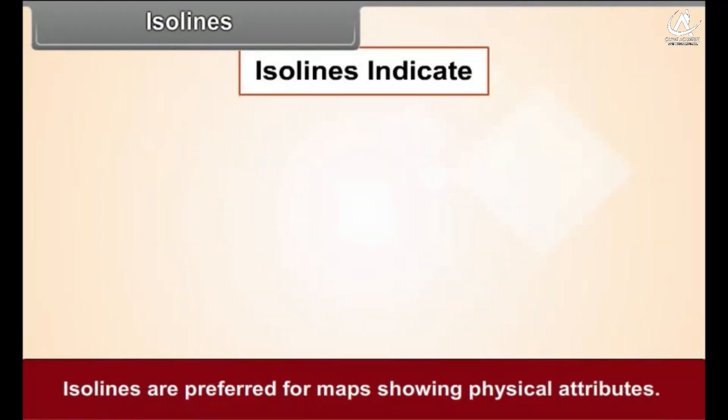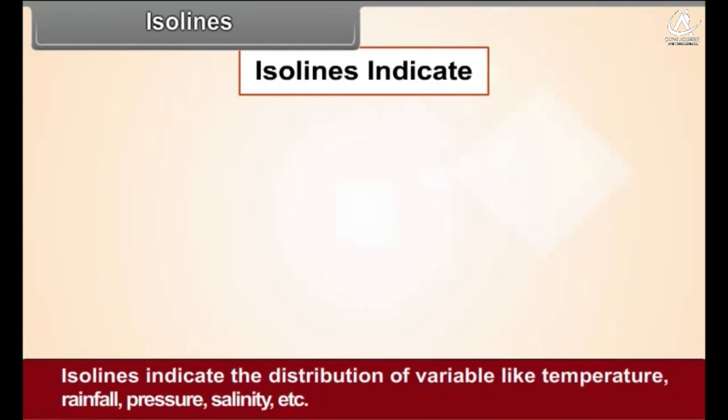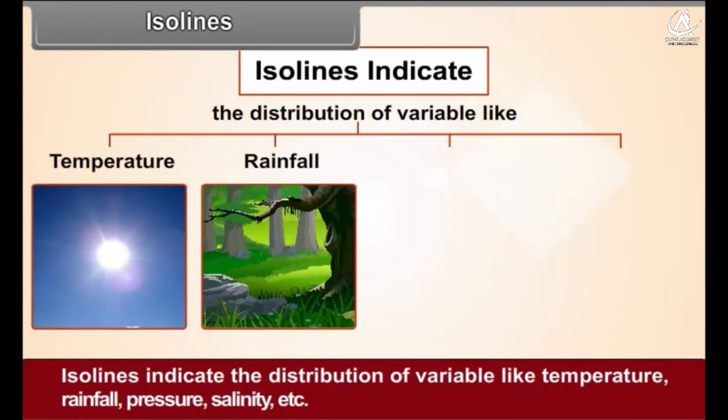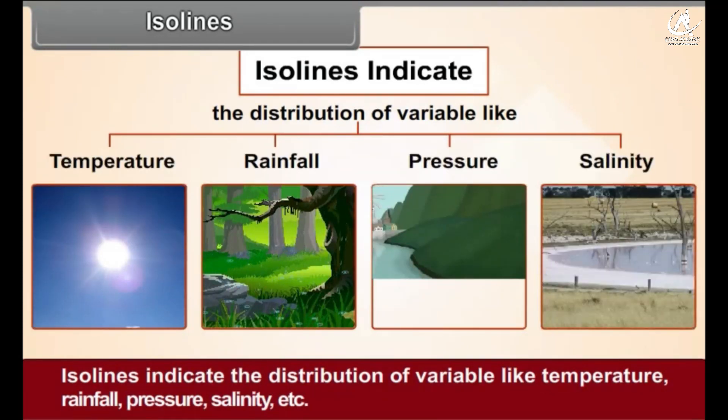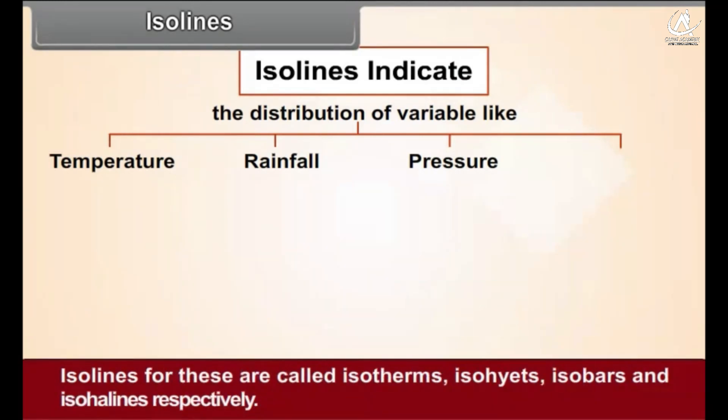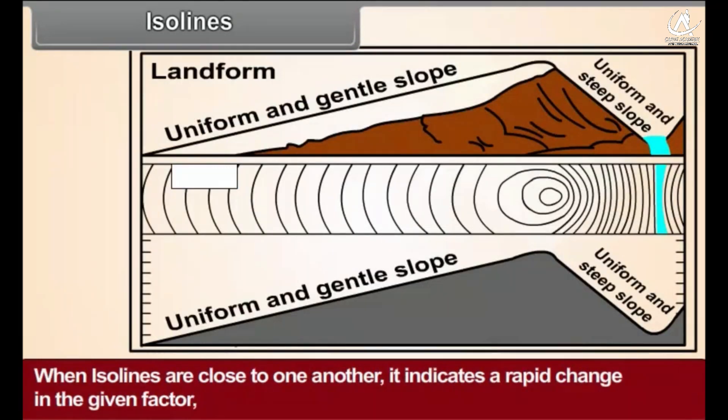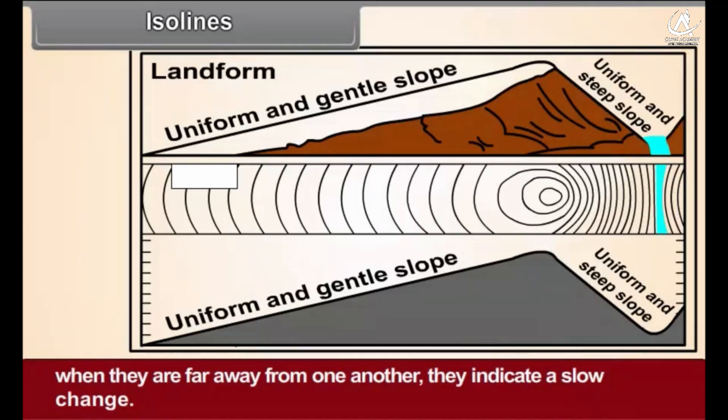Isolines are preferred for maps showing physical attributes. Isolines indicate the distribution of variables like temperature, rainfall, pressure, salinity, etc. Isolines for these are called isotherms, isohyets, isobars, and isohalines respectively. When isolines are close to one another it indicates a rapid change in the given factor. When they are far away from one another they indicate a slow change.